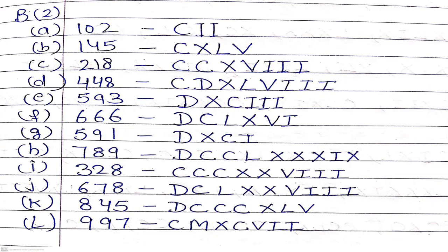Question 2: write the following in Roman numerals. Part A: 102 — 100 is C, and 2 is II, so the answer is CII. Part B: 142 — 100 is C, 40 is XL, and 2 is II, so CXLII. Part C: 218 — 200 is CC (100+100), 10 is X, and 8 is VIII, so the answer is CCXVIII. Similarly, you have to solve the other parts.